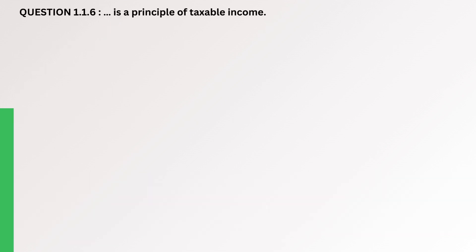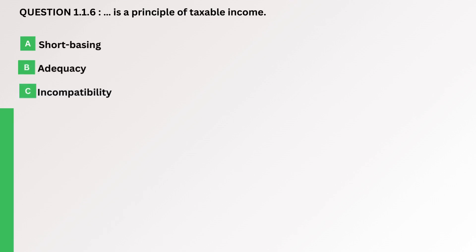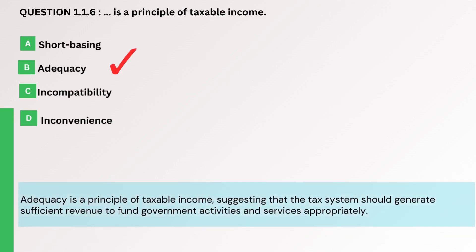Question. Which is a principle of taxable income? A. Broad basing. B. Adequacy. C. Incompatibility. D. Inconvenience. The correct answer is B. Adequacy. Adequacy is a principle of taxable income, suggesting that the tax system should generate sufficient revenue to fund government activities and services appropriately.